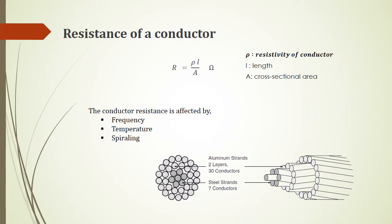Spiraling is a method we use to reduce the AC inductance. We don't use a single conductor but many small cables, and there is a good reason behind it — it is to reduce the skin effect and also to increase the flexibility and durability of the line.